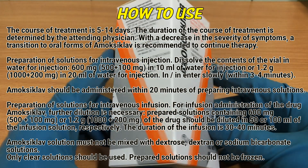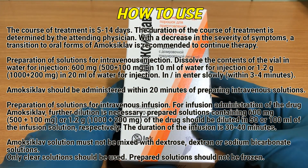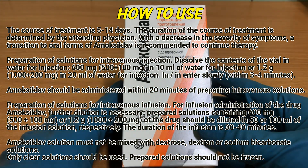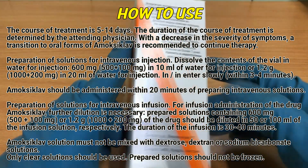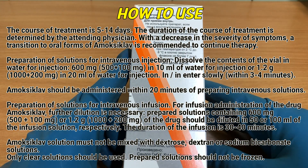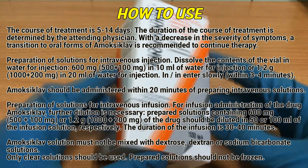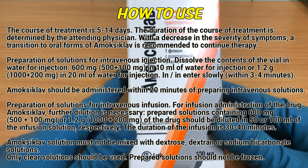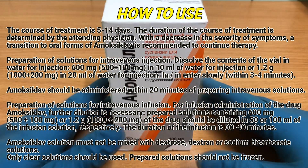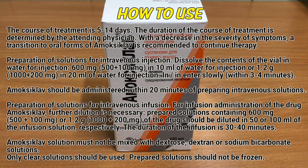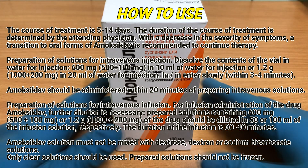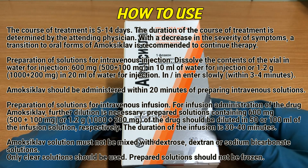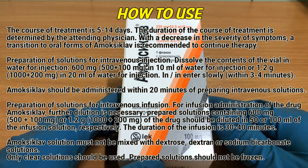Preparation of solution for intravenous injection: dissolve the contents of the vial in water for injection — 600 mg (500 plus 100 mg) in 10 ml of water for injection, or 1.2 g (1000 plus 200 mg) in 20 ml of water for injection. Intravenous injection should be given slowly, within 3 to 4 minutes. Amoxiclav should be administered within 20 minutes of preparing intravenous solutions.